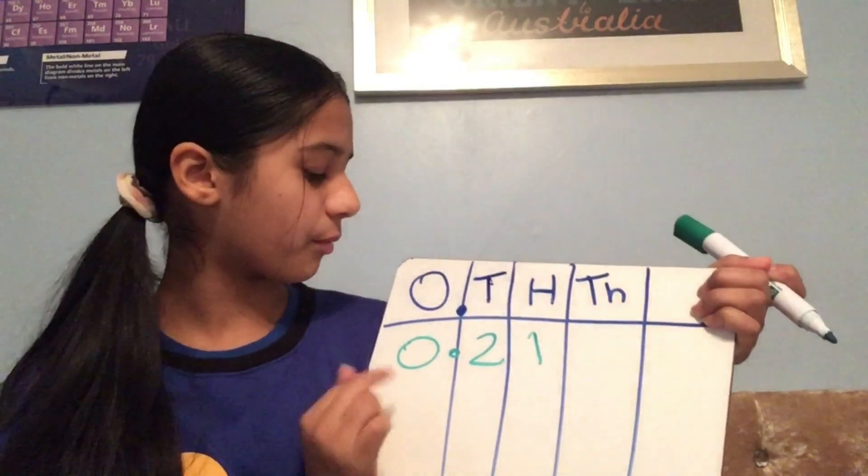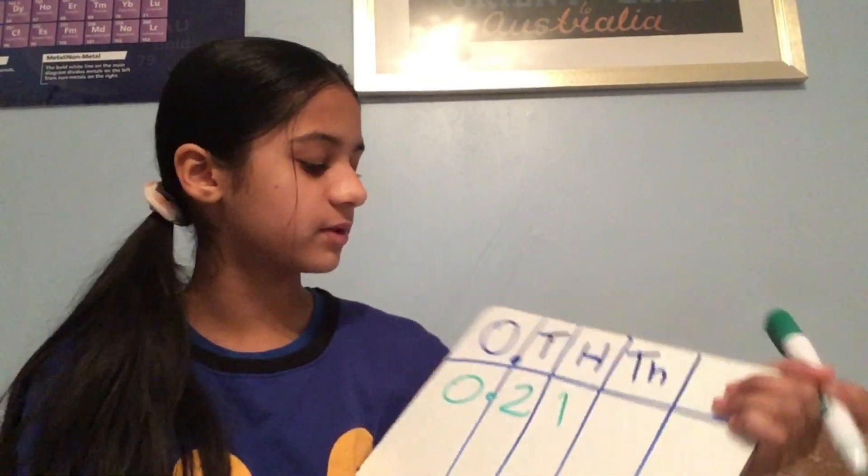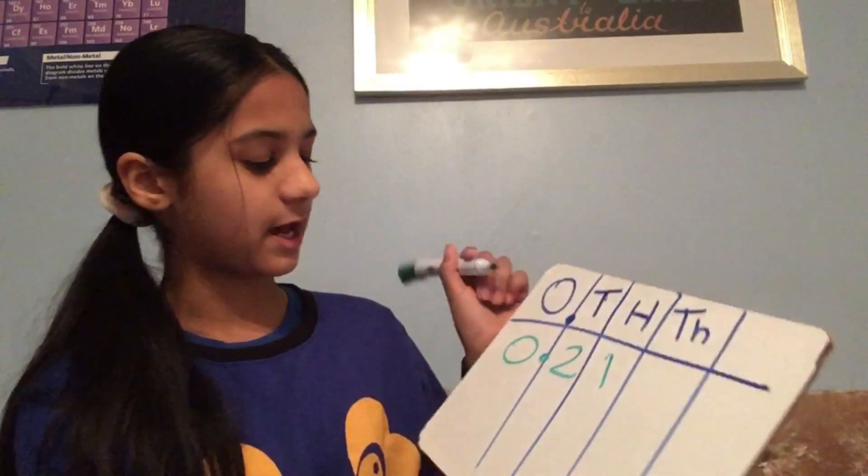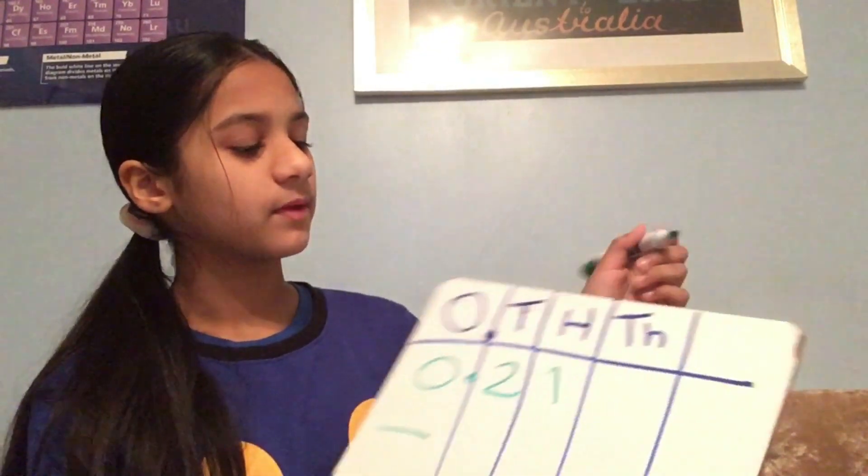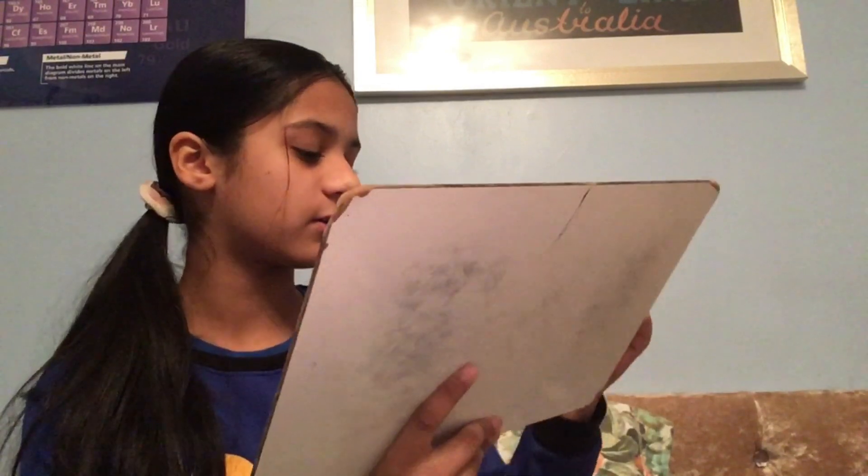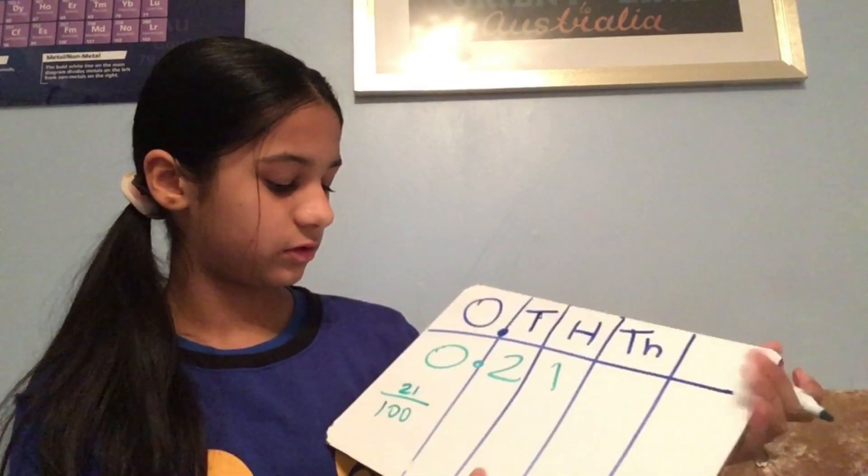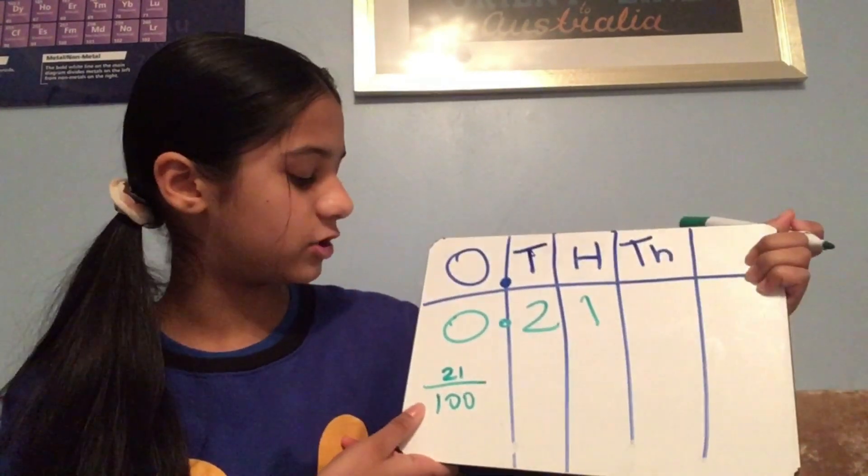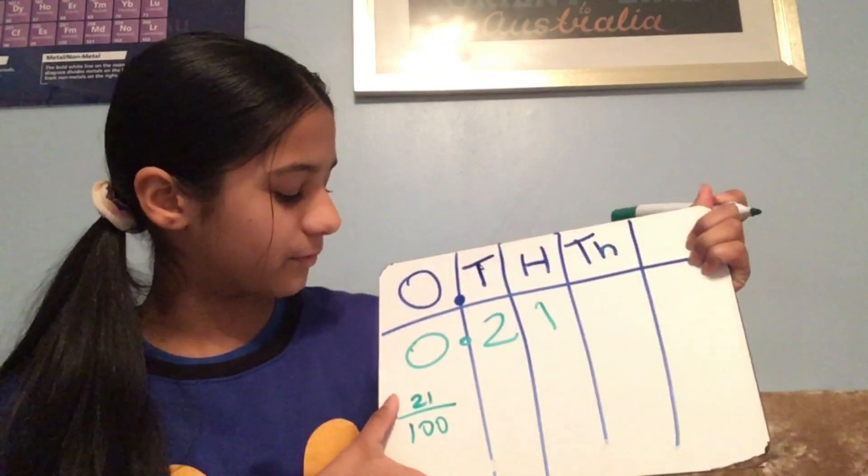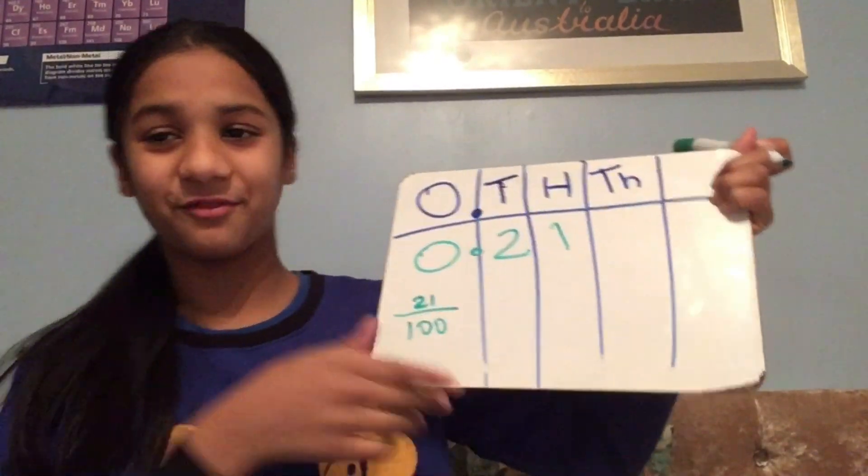And so, there's 0 1s, there are 2 10ths, there's 1 100ths. So, you'd write it down as, well, there's 100ths. So, you'd write 100th as the numerator. And so, you'd write the denominator as 100 and the numerator as 21. So, 21 over 100.